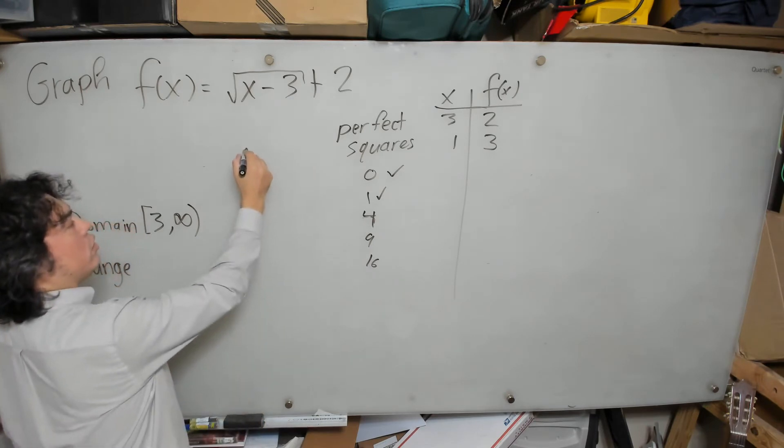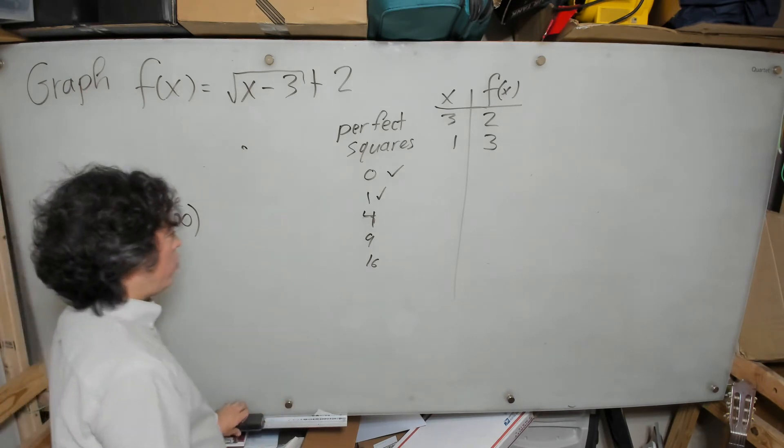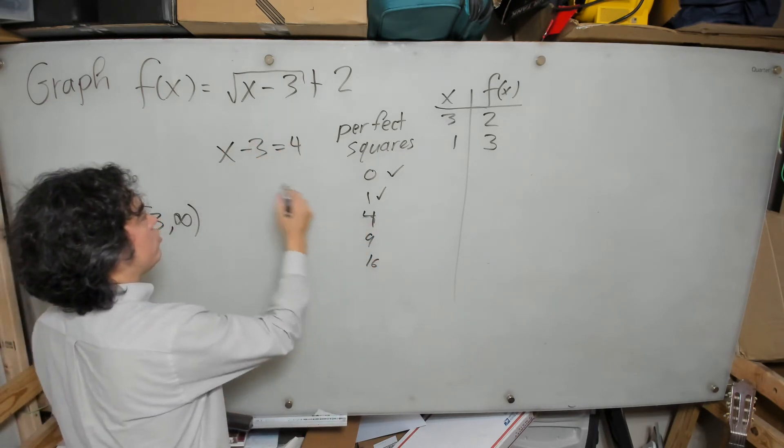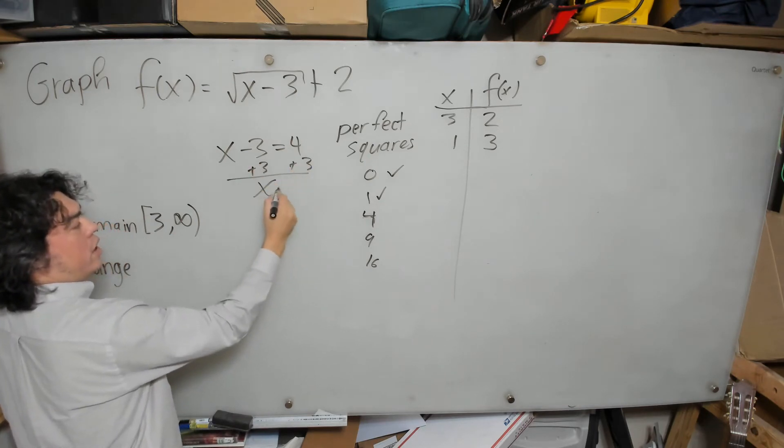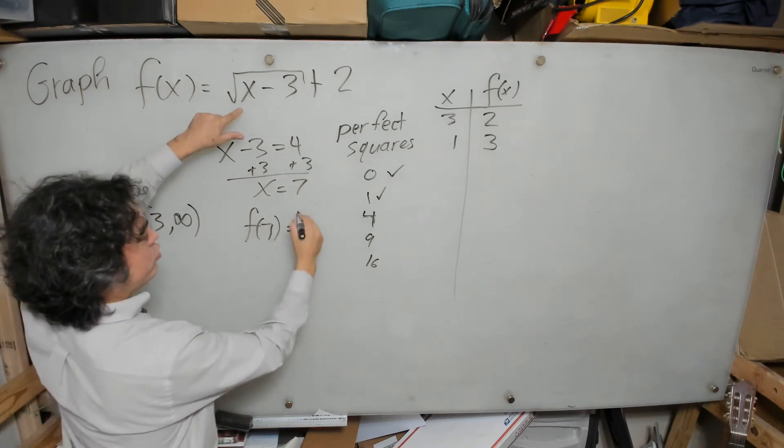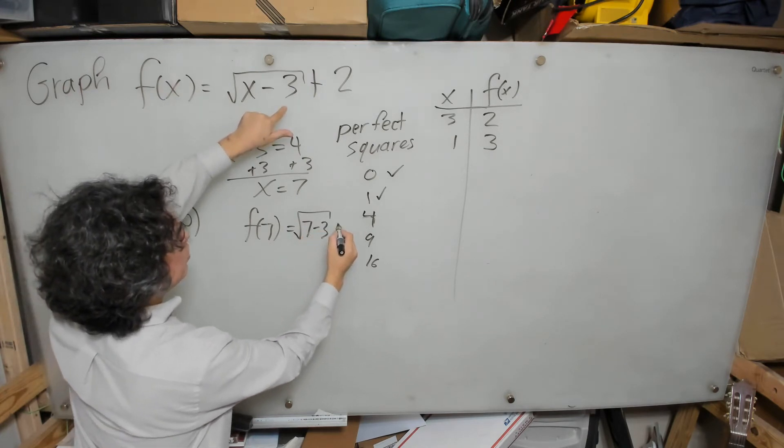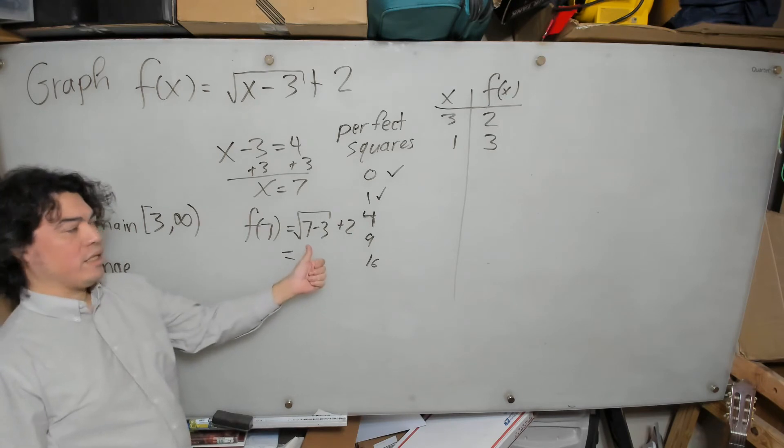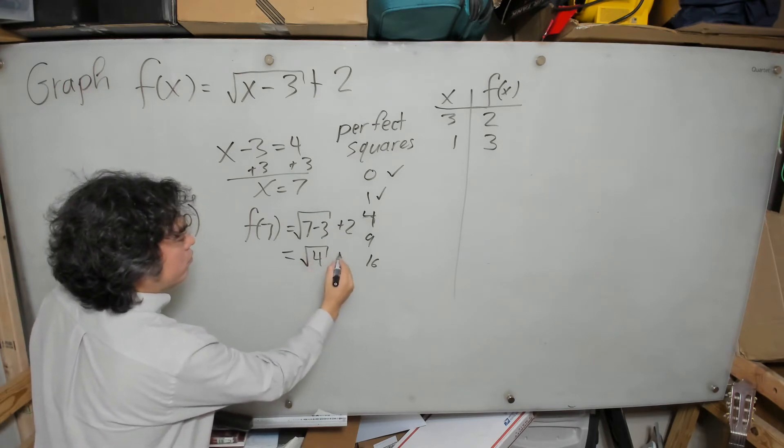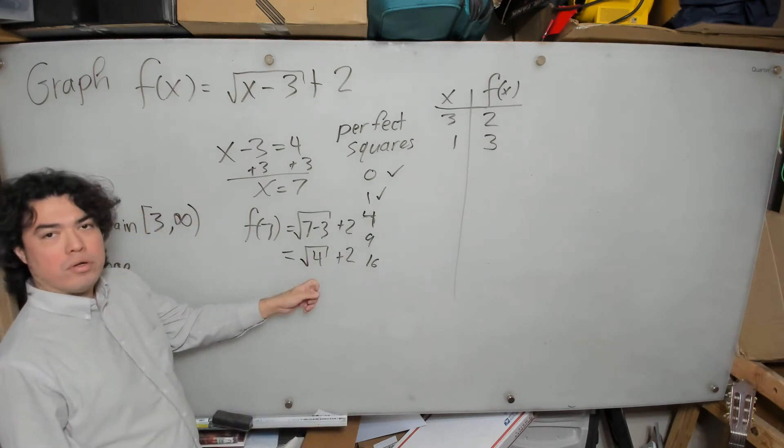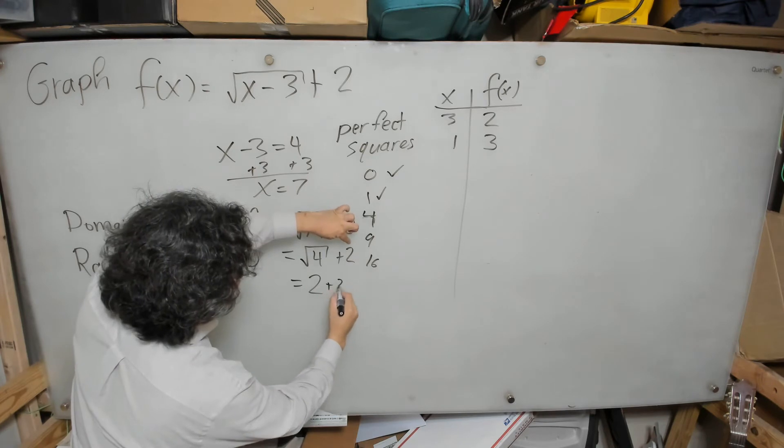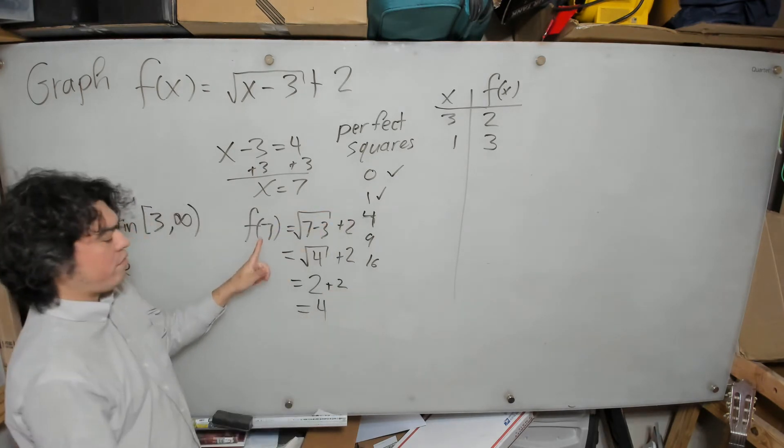Now I'm going to calculate what makes the inside equal to 4. So x minus 3 equals 4. Plus 3 plus 3, x equals 7. Now I'm going to evaluate the function at 7. F of 7 is equal to the square root of 7 minus 3 plus 2. And then we say, okay, 7 minus 3. That's 4, of course, by design, plus 2. What's the square root of 4? 2. Why? Because 2 times 2 is 4. So it'll be 2 plus 2, which gives us 4. So f of 7 is 4.